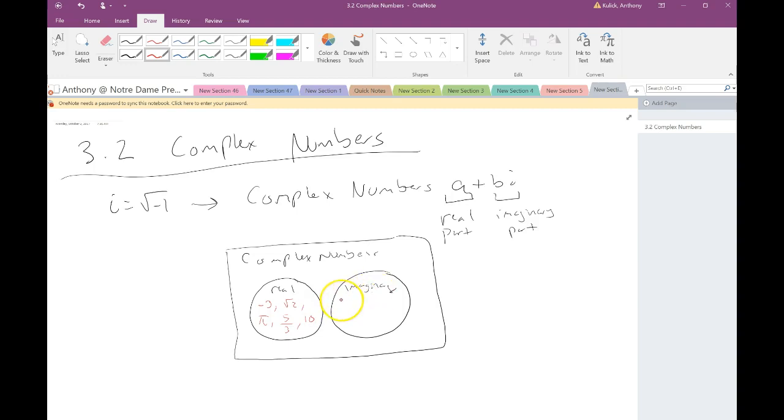The imaginary numbers you're going to have like 2i, i square root of 3, 7i over 6... Not i plus 2. So you're going to have things like this, right?